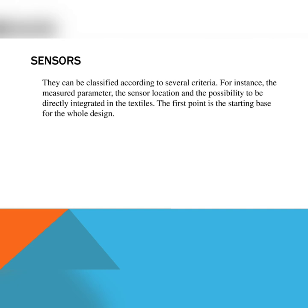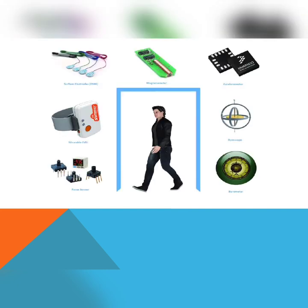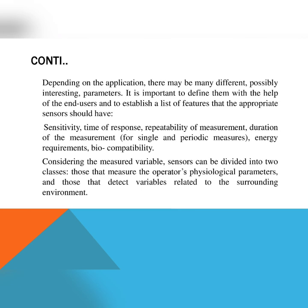The first point is the starting base for the whole design. Types of sensors already available in the market include surface electrodes to measure EMG (electromyographic signal), magnetometers, accelerometers, gyroscope, barometer, and force sensors. Depending on the application, there may be many different possibly interesting parameters. It is important to define them with the help of the end user and to establish a list of features that the appropriate sensor should have.